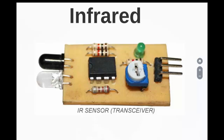Infrared is a serial, half-duplex, line-of-sight-based wireless technology for data communication between devices. It is generally used in remote controls of TVs, VCD players, etc. It supports point-to-point and point-to-multipoint communication, provided all devices involved are within the line of sight. The typical communication range of infrared lies between 10 centimeters and 1 meter.